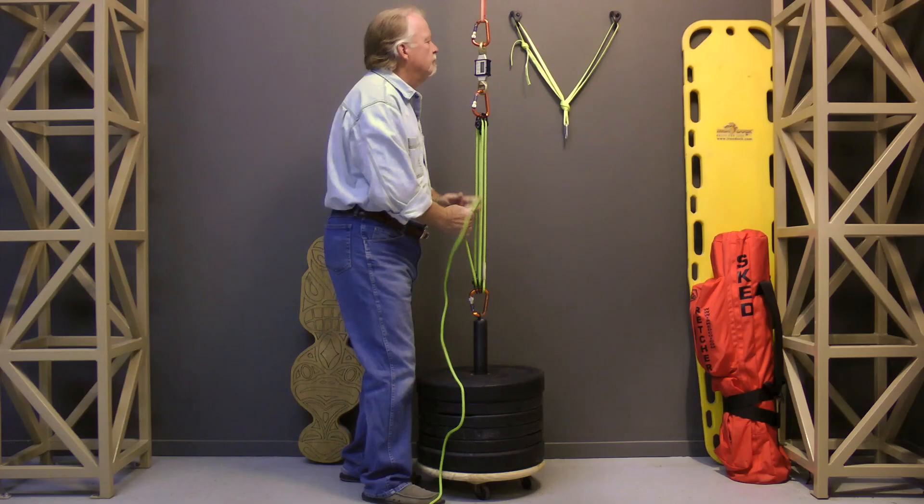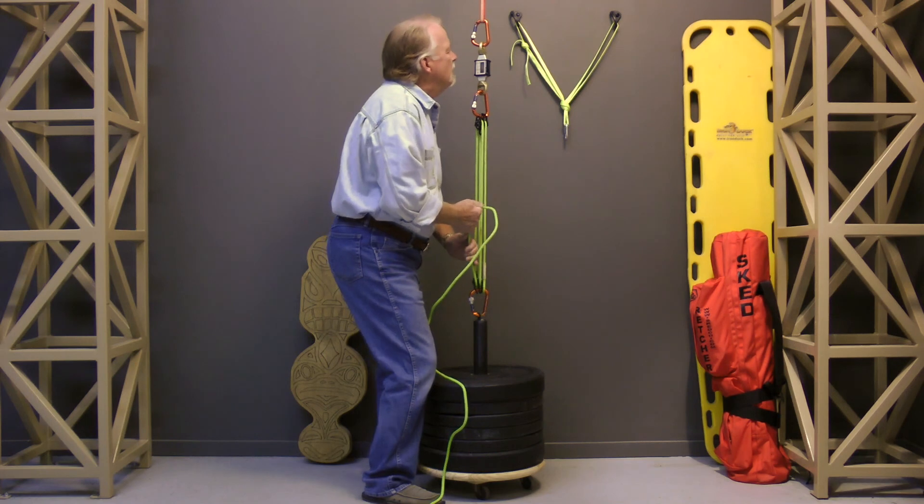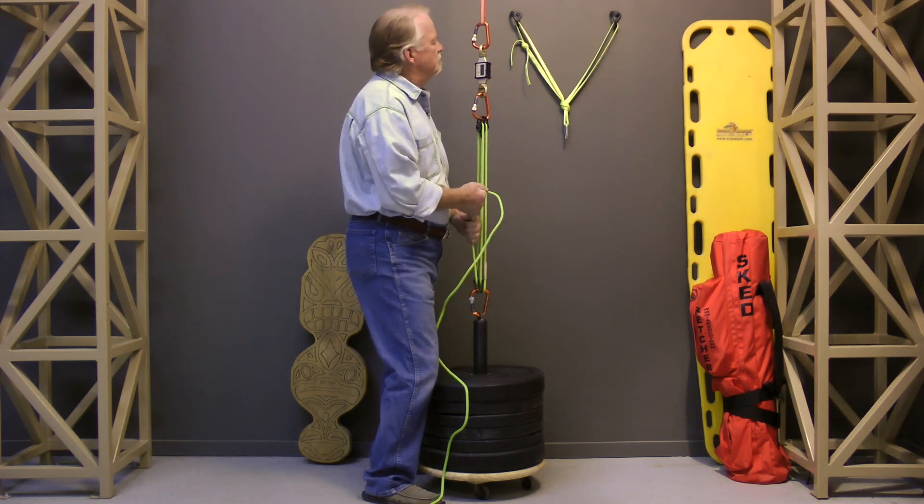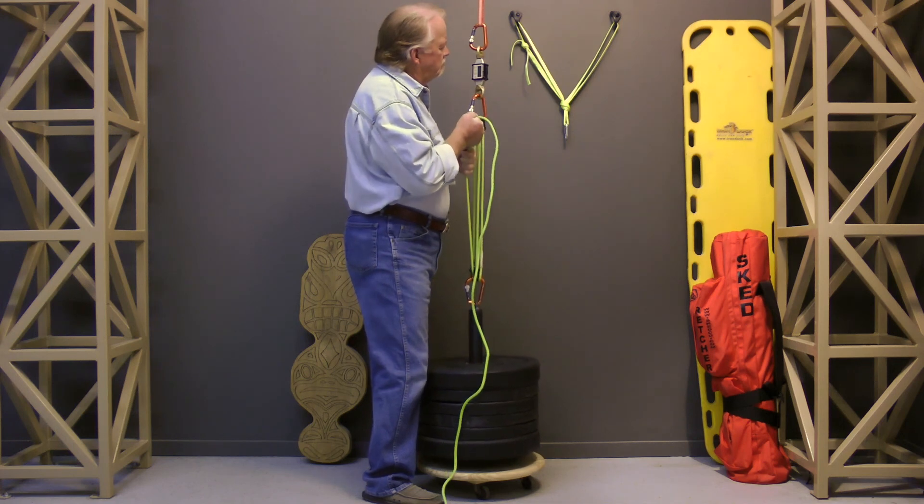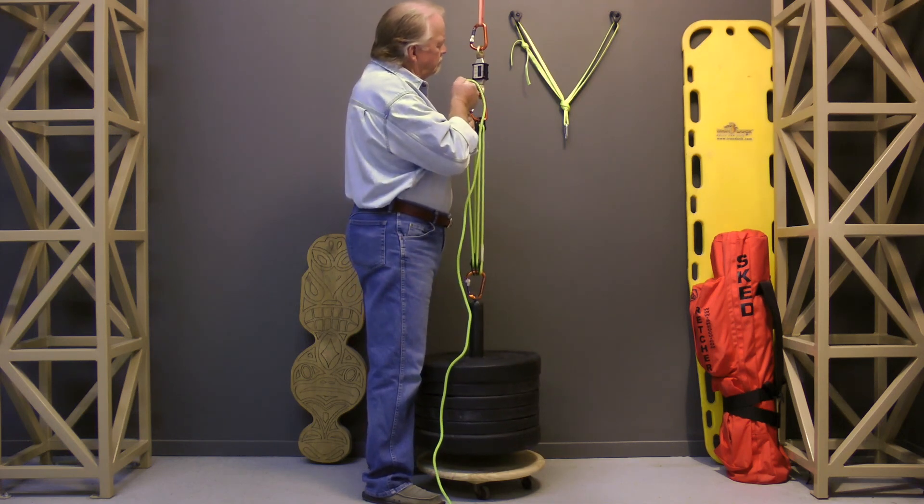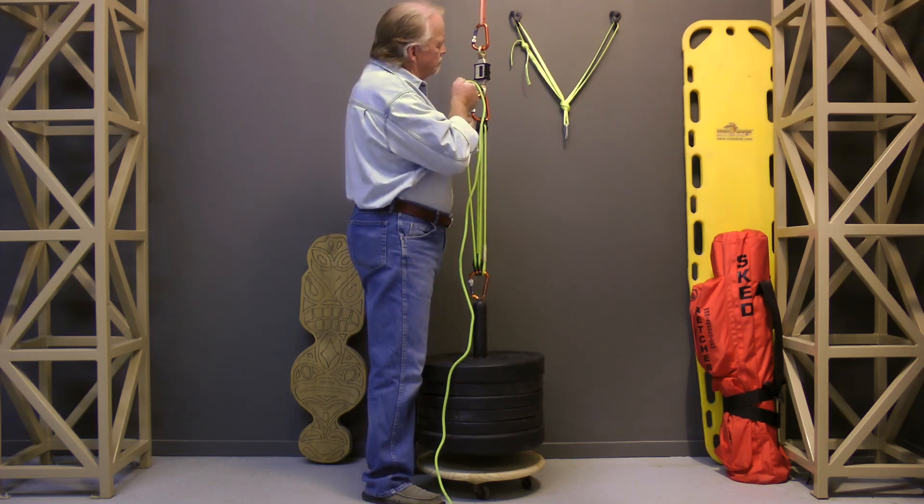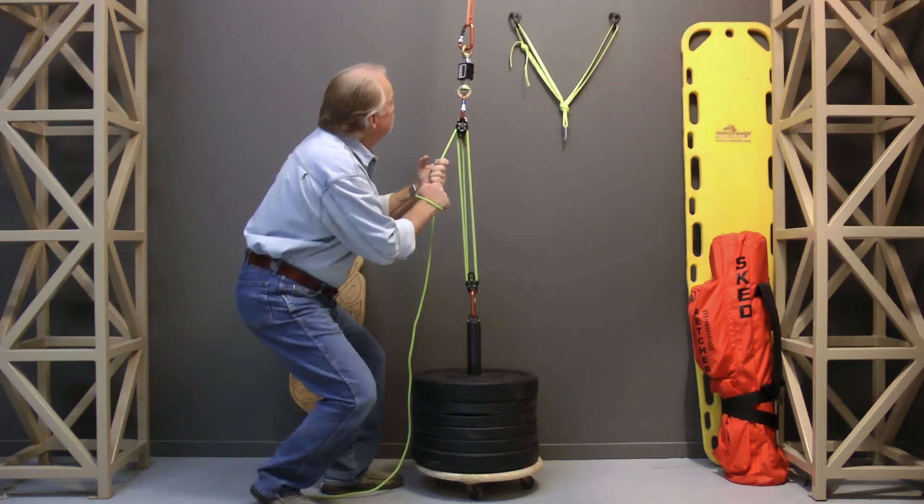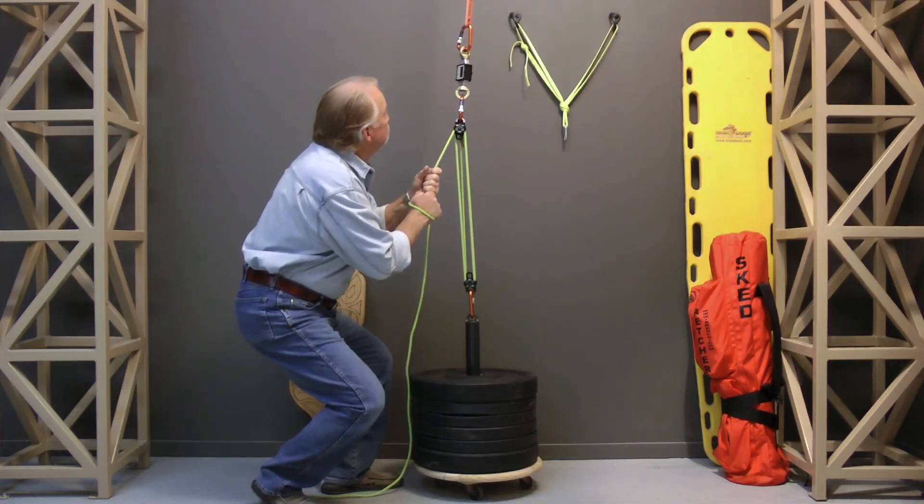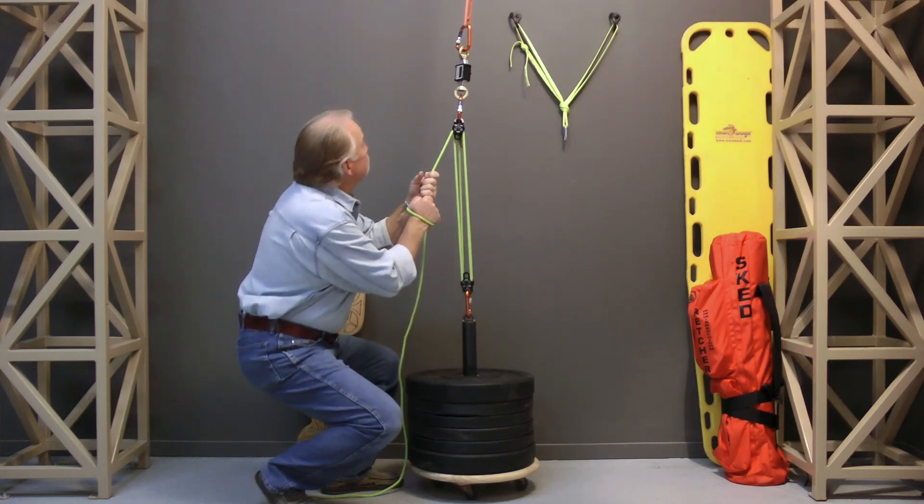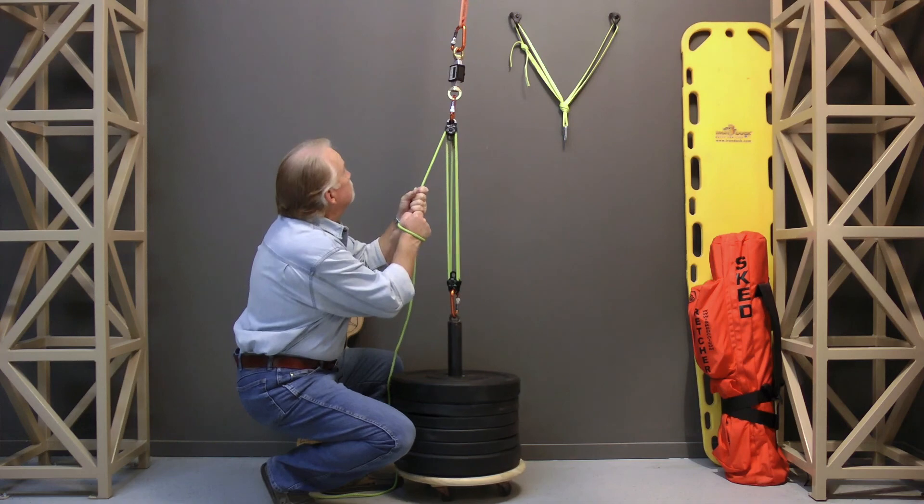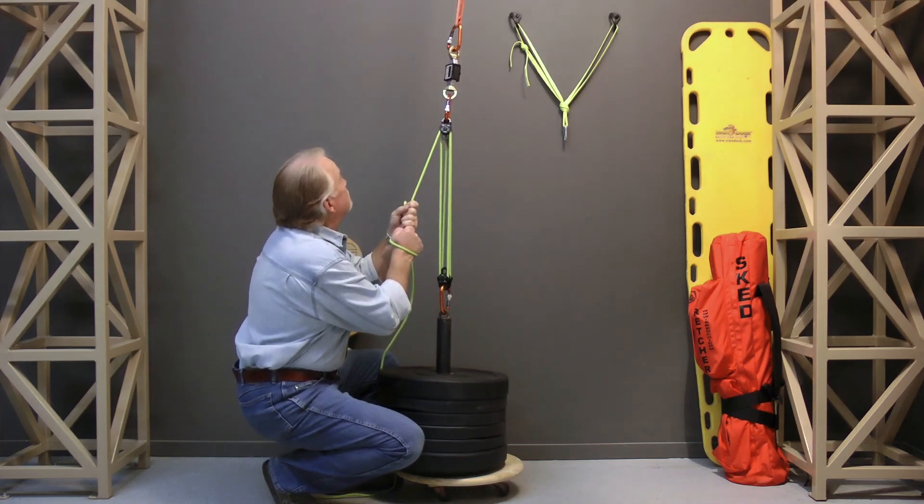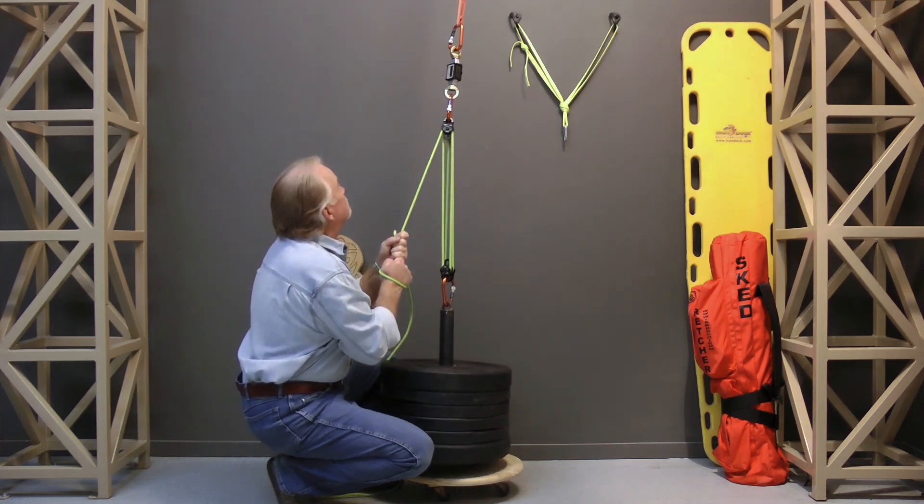Now back to where I started. 250 pound load. Lifting up with a 5 to 1 mechanical advantage, the load on the anchor should have been 4/5 or 200 pounds, but it was actually 190 pounds. Friction played a role in the difference. Redirecting to pull down with a 4 to 1 mechanical advantage, the load on the anchor should have been 5/4 or 312.5 pounds, but it was actually 350 pounds. Again, friction played a role in the difference.